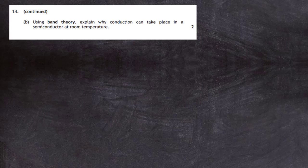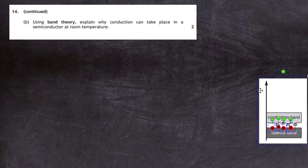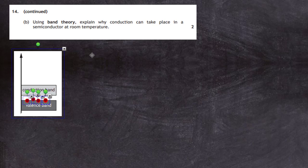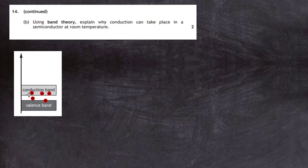Question 14, part b: using band theory, explain why conduction can take place in a semiconductor at room temperature. Looking at the band theory diagram for a semiconductor, the valence band is full of electrons — they cannot move about, so normally no conduction takes place. However, at room temperature there is enough heat energy to promote electrons from the valence band into the largely empty conduction band, where they are free to move about, making the semiconductor a better conductor.